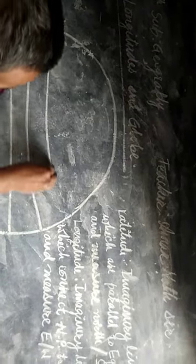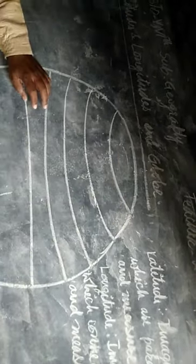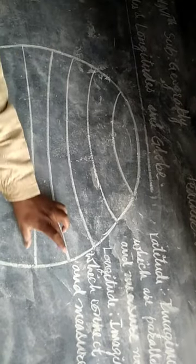Latitudes and longitudes — what is the definition of latitude? The definition of latitude is that imaginary lines which are parallel to the equator and measure north or south are called latitudes. Suppose this is the line which is parallel to the equator — all of these lines are parallel to equator.